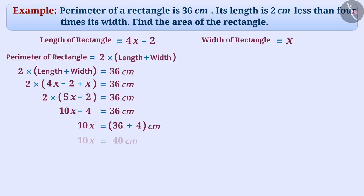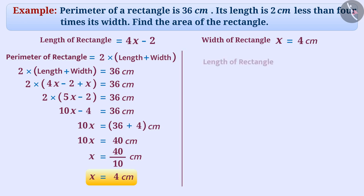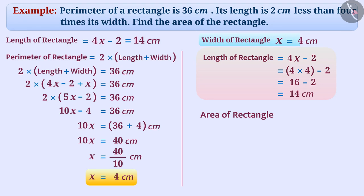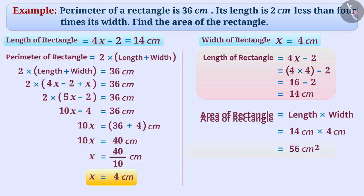On simplifying it, we will get the width of the rectangle, that is x is equal to 4 cm, and the length of rectangle is 14 cm. The area of a rectangle with width 4 cm and length 14 cm will be length multiplied by width, equal to 14 cm multiplied by 4 cm, which is equal to 56 square cm.